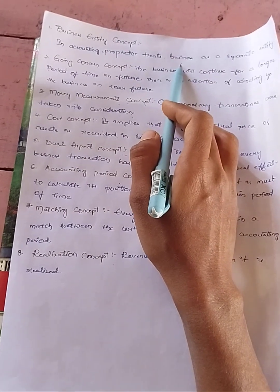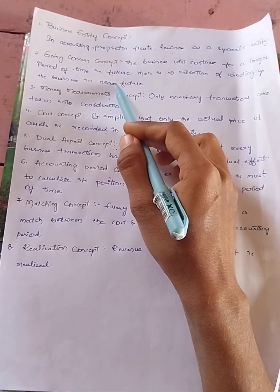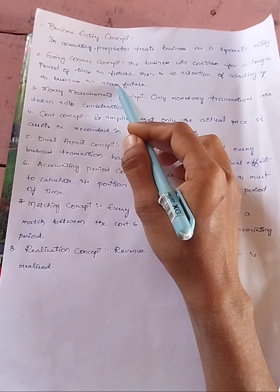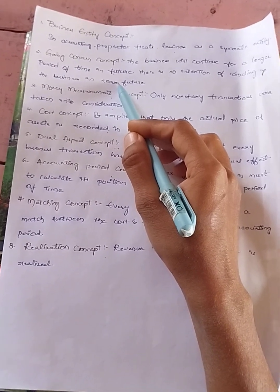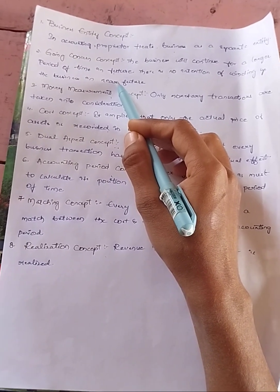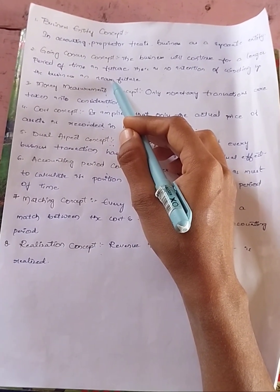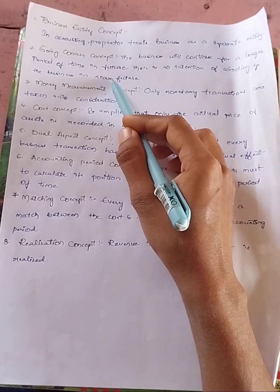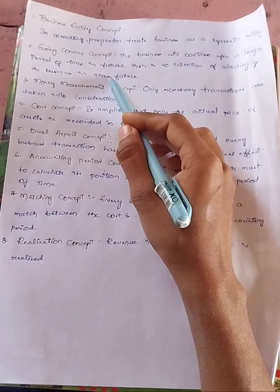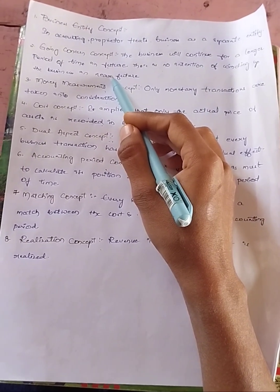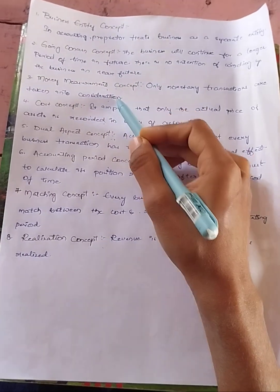The second concept is the Going Concern Concept. According to this concept, a business should be a continuous process. For example, if a person sells a scooty once, it is not considered a business. But if you sell the scooty for many times over many years, then it is considered a business.